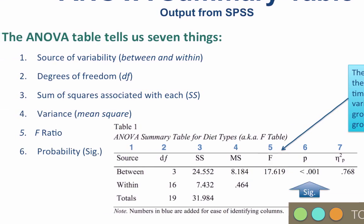Now sixth is a column for probability values and another column for eta-squared, the effect size. And just so that you know, those numbers in blue one through seven above each of the columns were added for ease of identifying the columns.